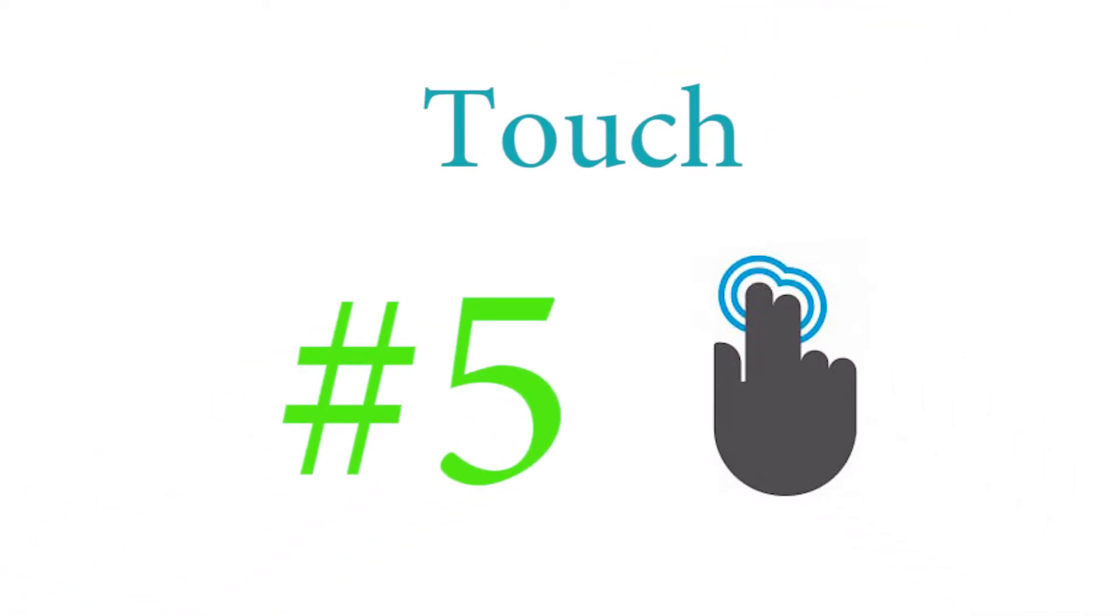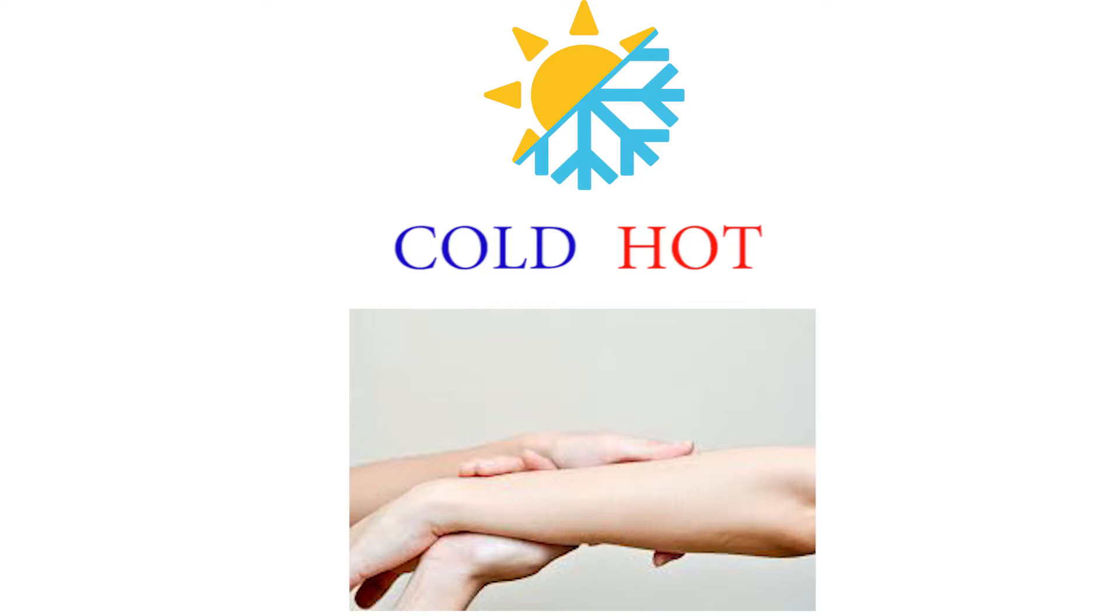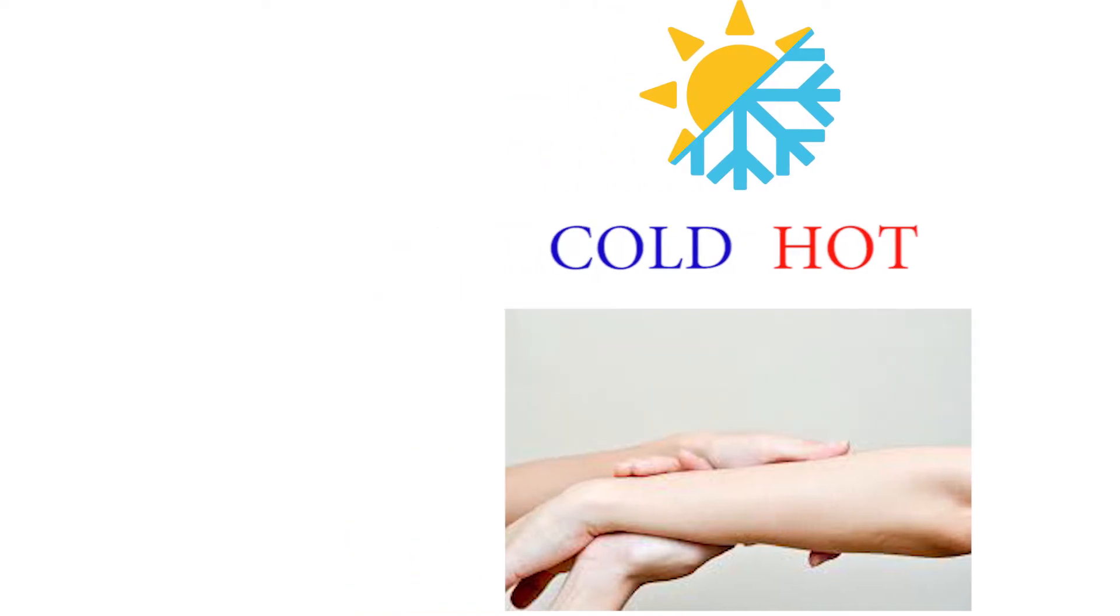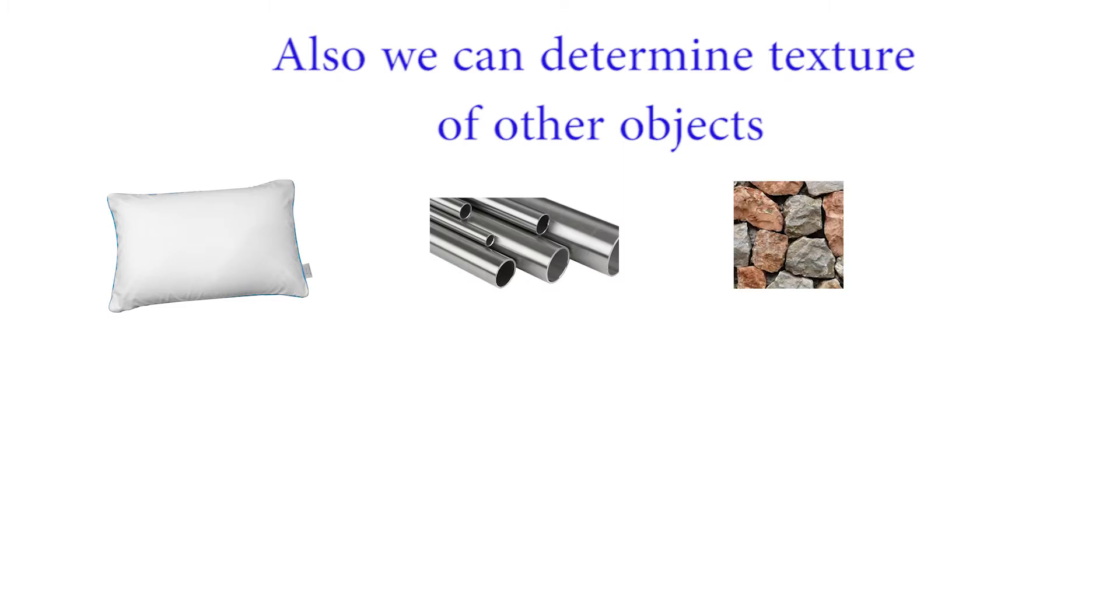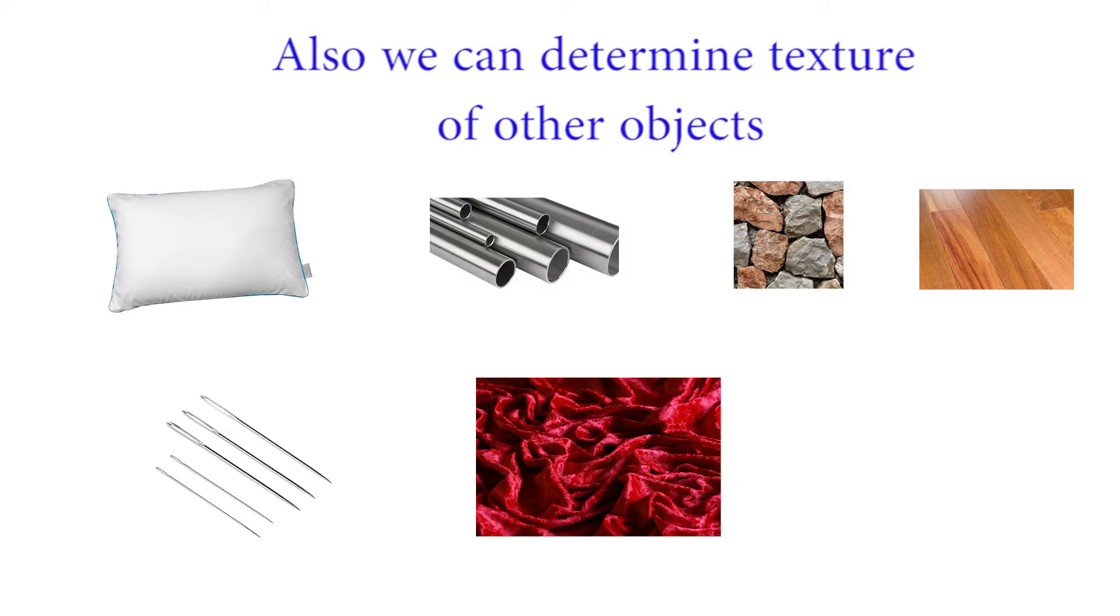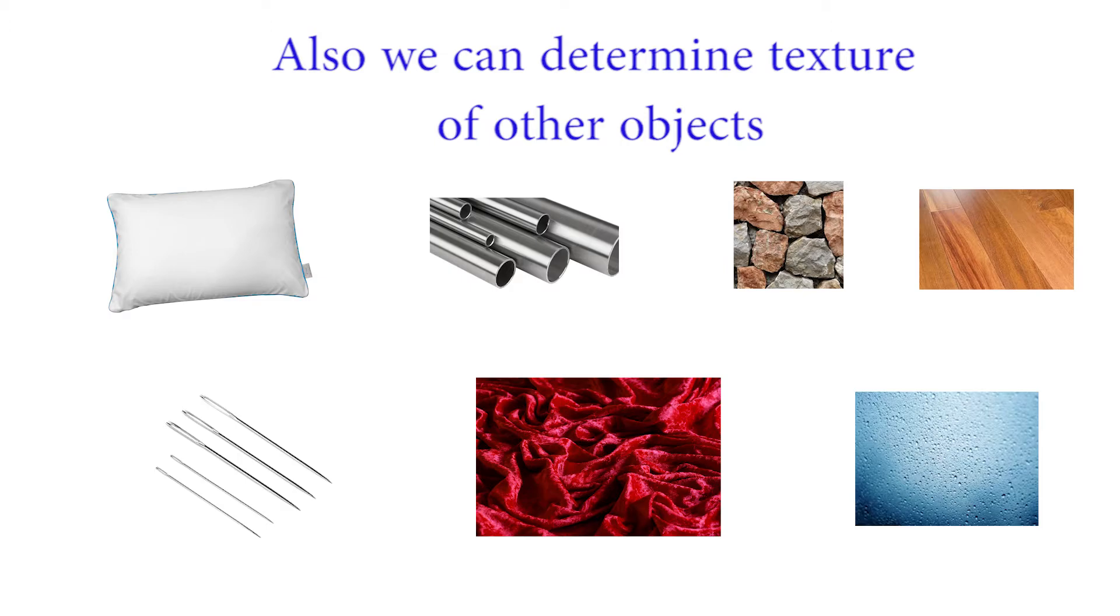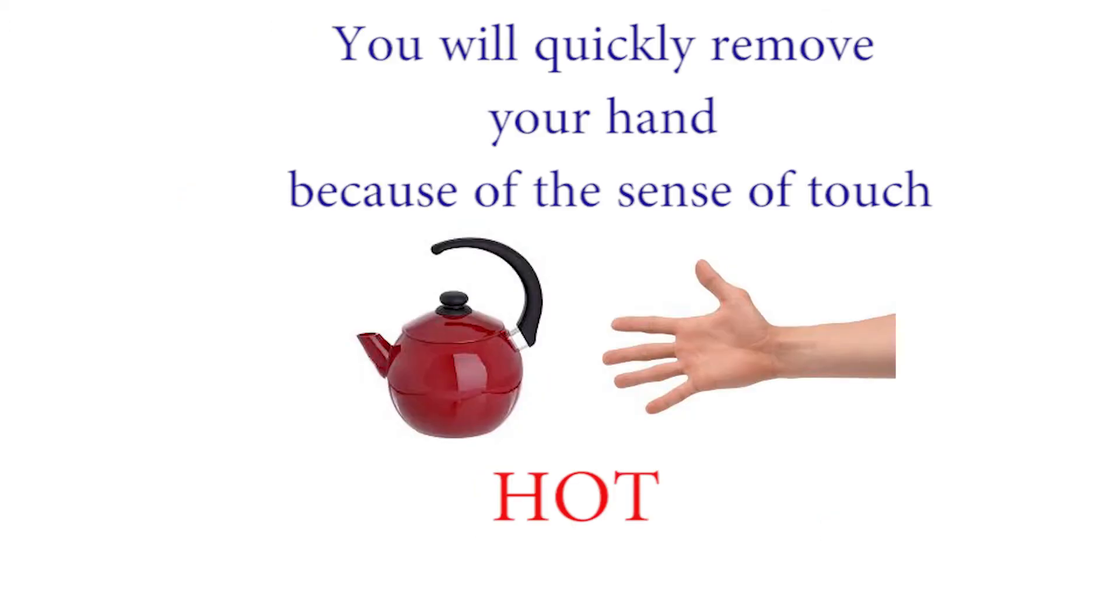Number five is touch. With our skin we can feel and determine if it is cold or hot. Also, we can determine texture of other objects, for example if they are soft, hard, rough, smooth, sharp, velvety, or moist. For example, when you touch something hot, you will be able to quickly remove your hand.